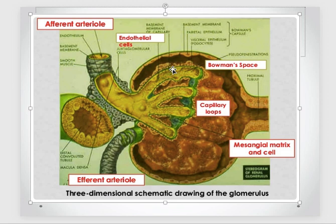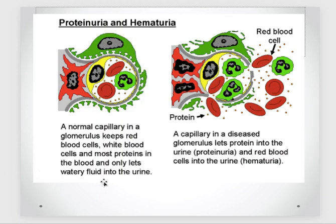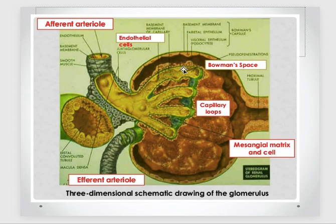Whenever there is damage to these structures — for example, if the podocytes are inflamed — proteins and blood are going to leak out. When blood starts leaking out it presents as hematuria. When proteins start leaking out it is called proteinuria. A normal capillary in a glomerulus keeps red blood cells, white blood cells, and most proteins in the blood, and only lets watery fluid into the urine. Whereas in a damaged glomerulus, proteins as well as red blood cells are leaking out.